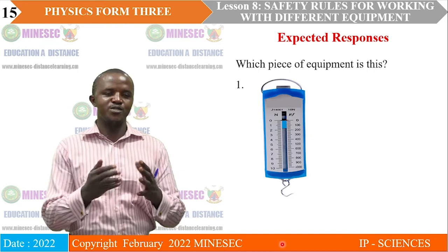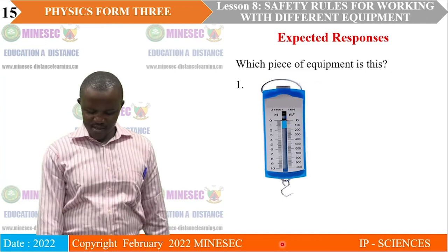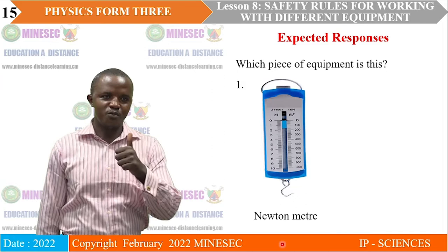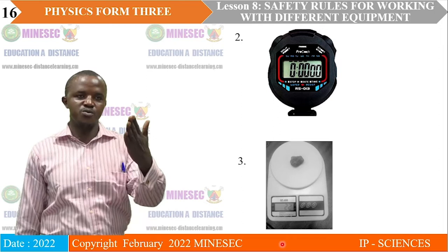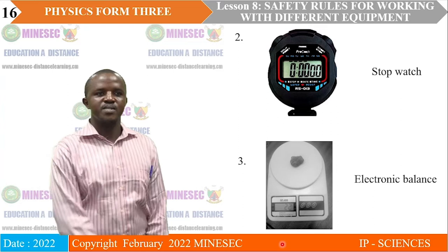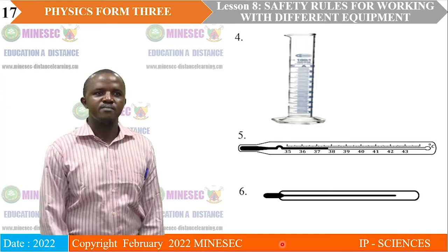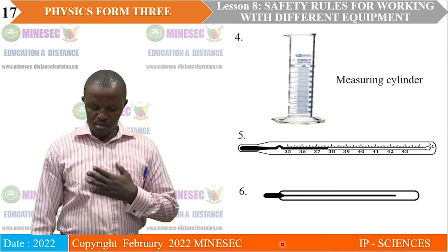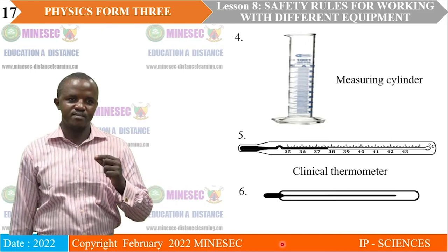Now we are going to show you the answers. If you said Newton meter for number one, you are right. The second piece of equipment — number two — corresponds to a stopwatch, so if you said stopwatch, you are correct. The third is actually an electronic balance.